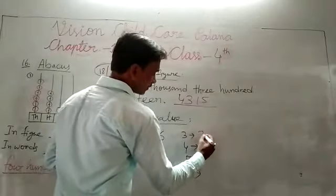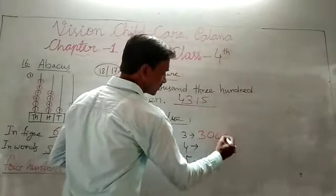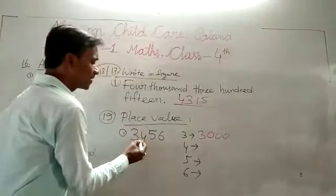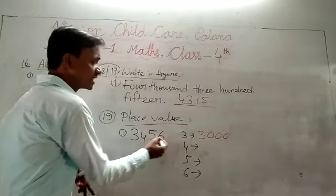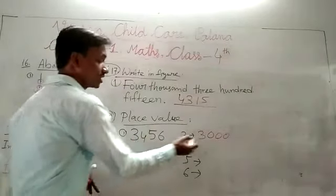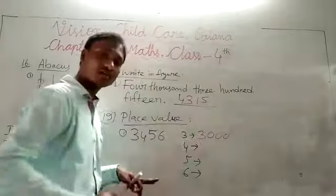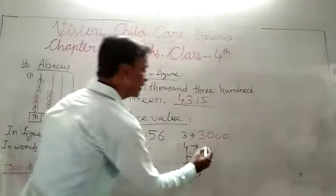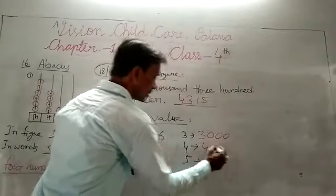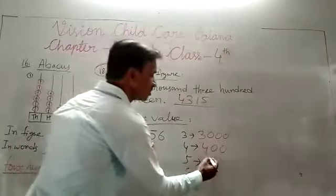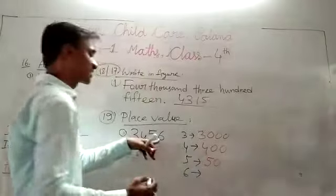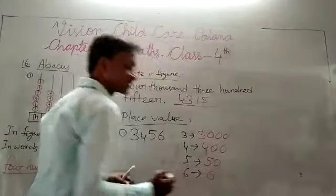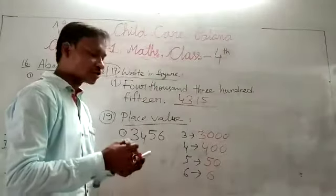Three thousand - three, after three zeros. After three, three digits, so 3,000. After four, the place value is four hundred. After five, place value is fifty. After six, place value is six. Understand, students?